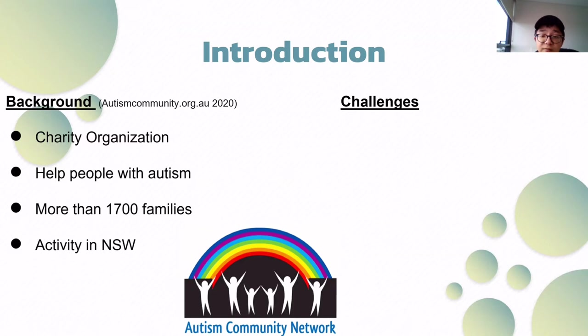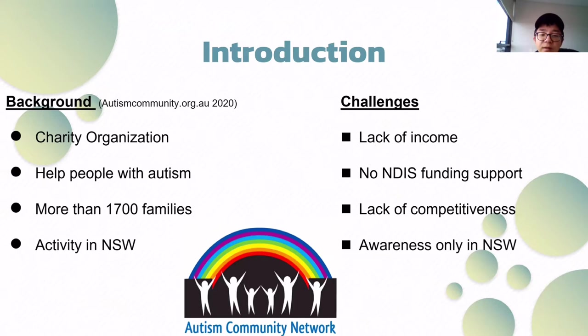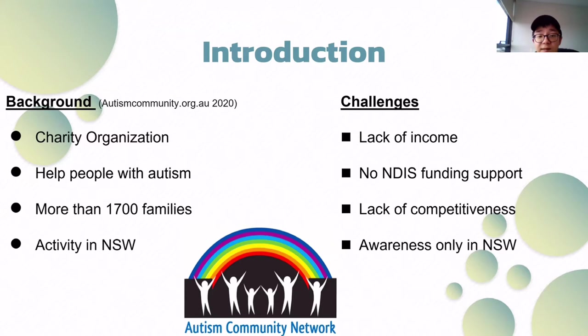However, the development of ACN also faces many challenges. First, it lacks enough income and NDIS funding to operate and expand its organization. Second, compared with its competitors, ACN lacks specialized services and products to help people with autism. At the same time, the awareness and service scope of ACN only covers New South Wales, which is also a big limitation.